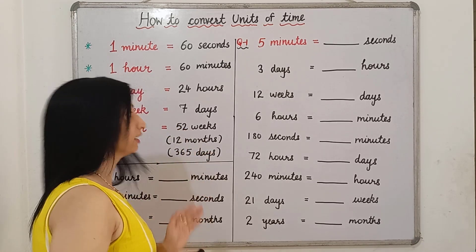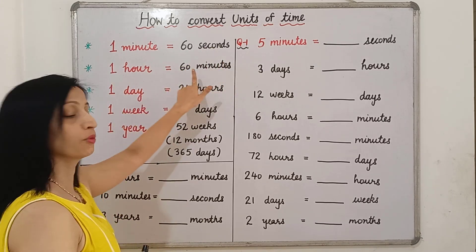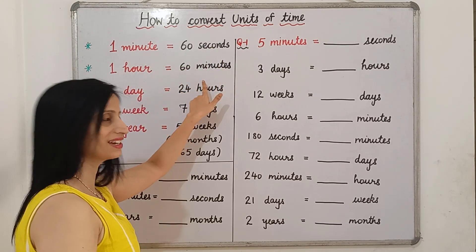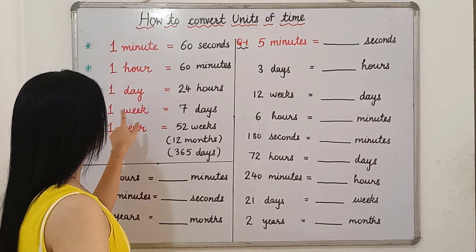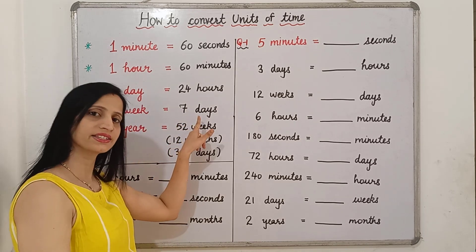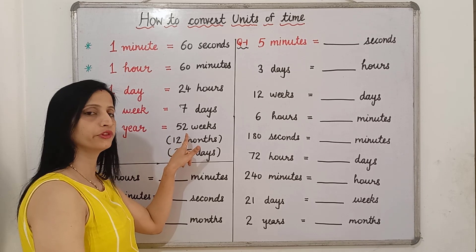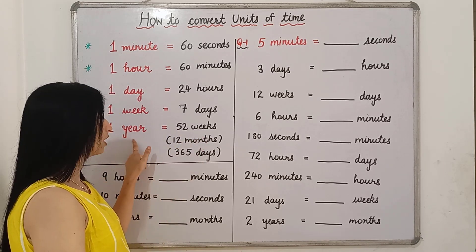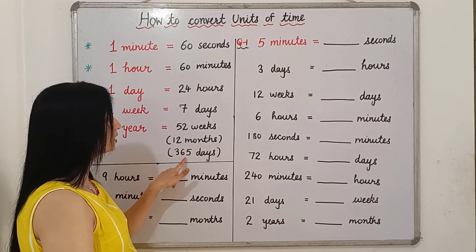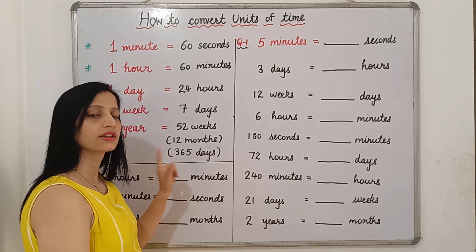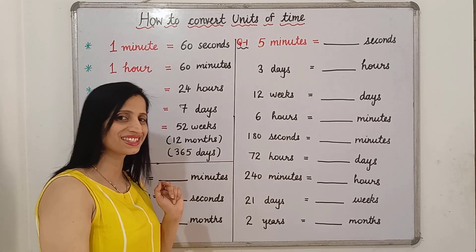As you all know, 1 minute is equal to 60 seconds. 1 hour has 60 minutes. 1 day is equal to 24 hours. 1 week has 7 days. 1 year is equal to 52 weeks, or 12 months, or 365 days in a regular year. And in a leap year there are 366 days.